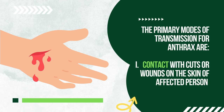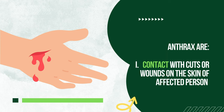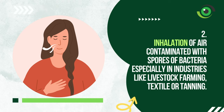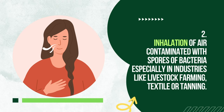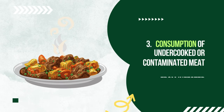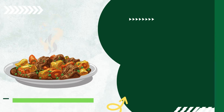The primary modes of transmission for anthrax are through contact with cuts or wounds on the skin of the affected person, inhalation of air contaminated with spores of bacteria especially in industries like livestock farming, textile or tanning, and consumption of undercooked or contaminated meat from infected animals.